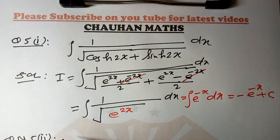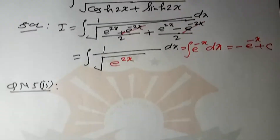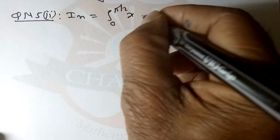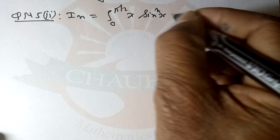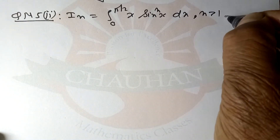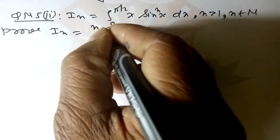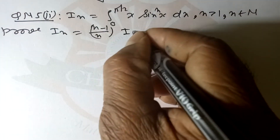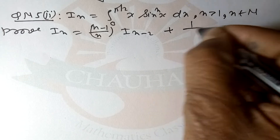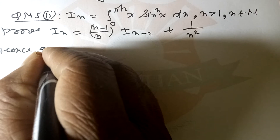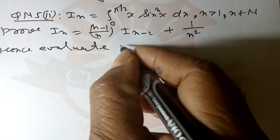The question is: In = ∫₀^(π/2) x·sinⁿ(x) dx, where n > 1 and n is a natural number. Prove that In = (n-1)/n · I(n-2) + 1/n². Hence evaluate I5.